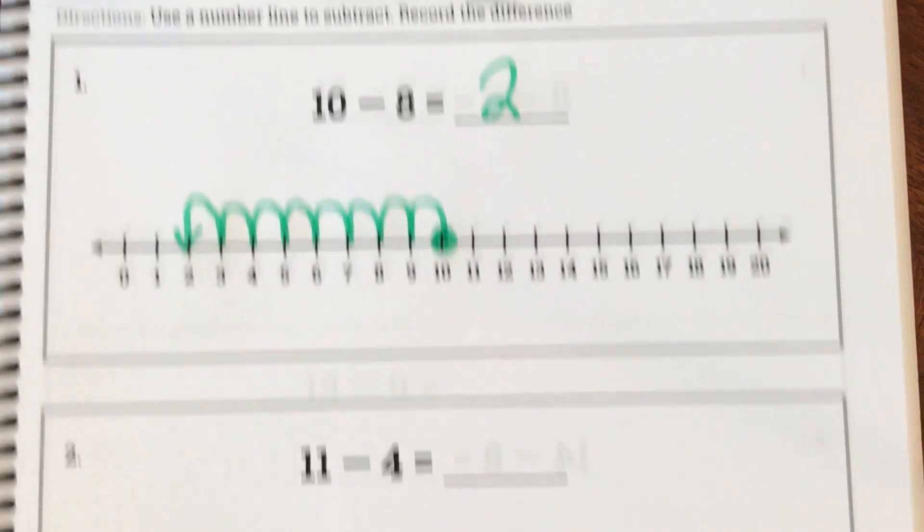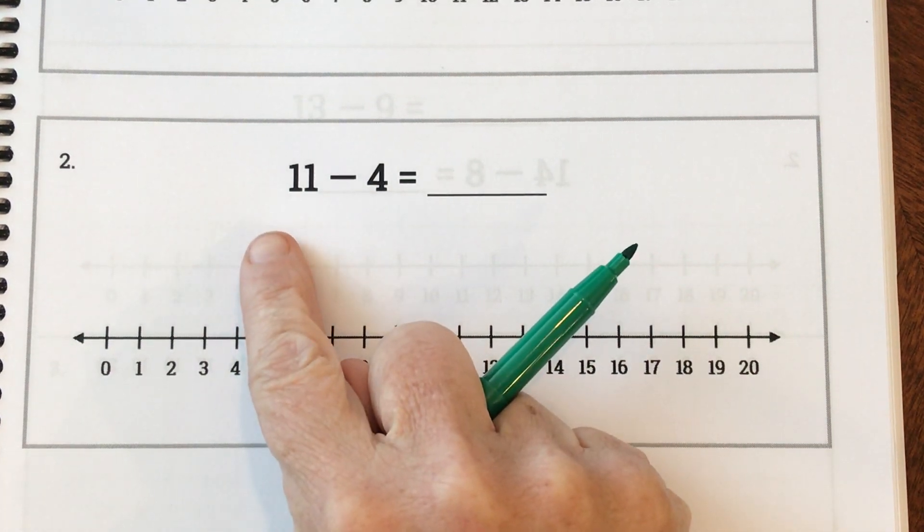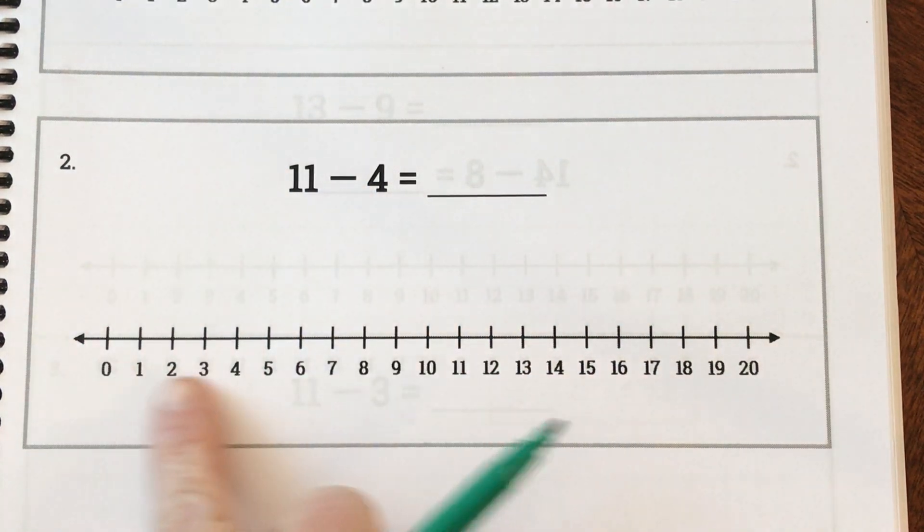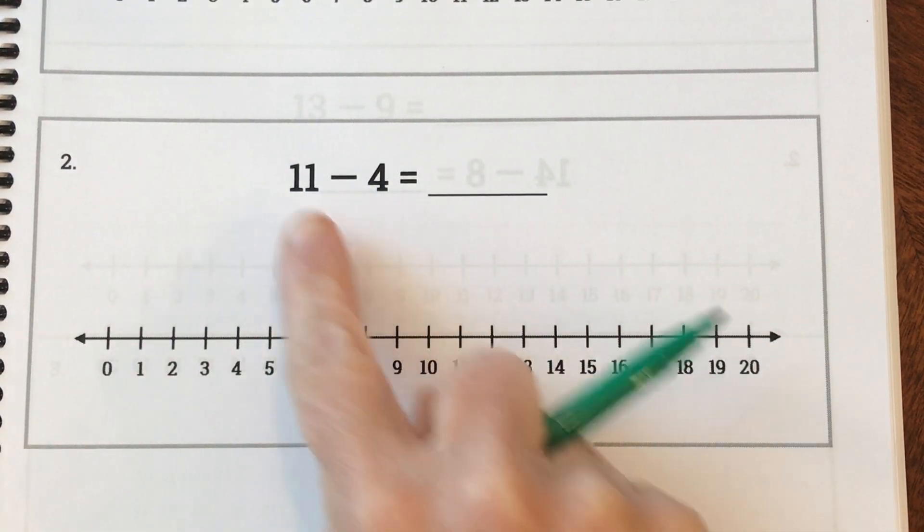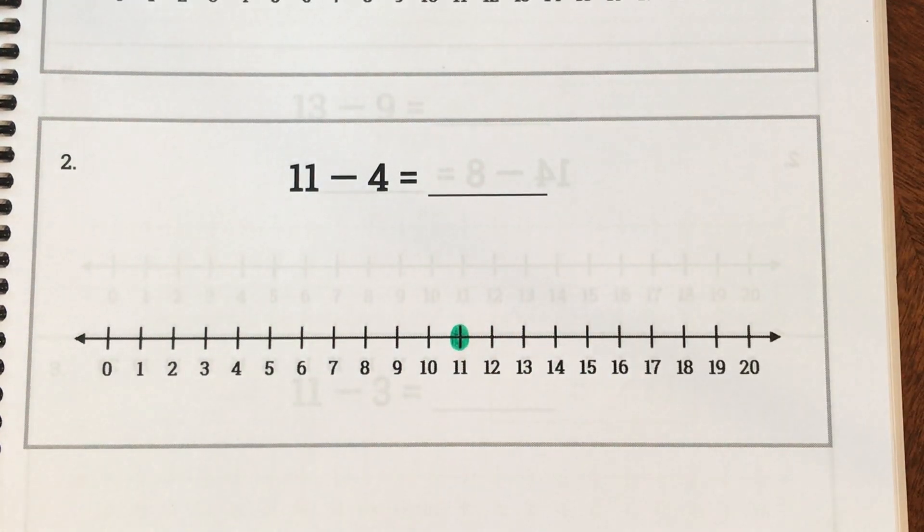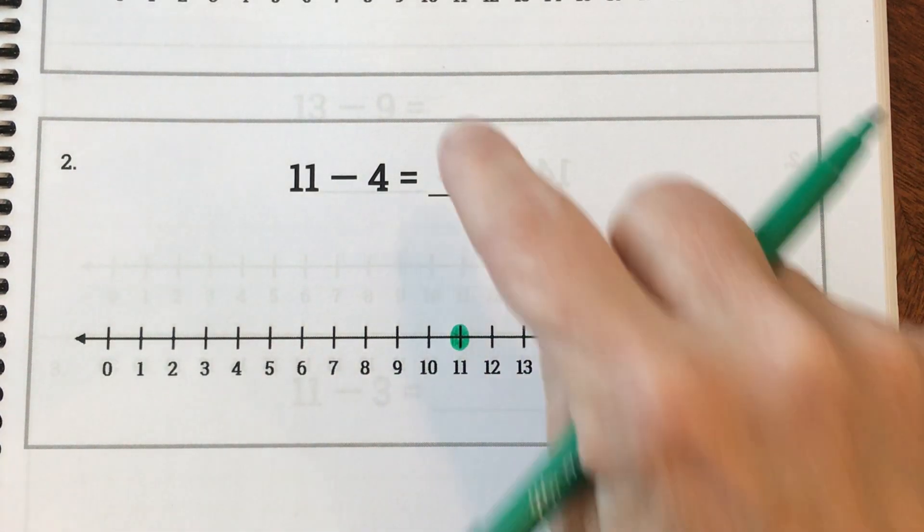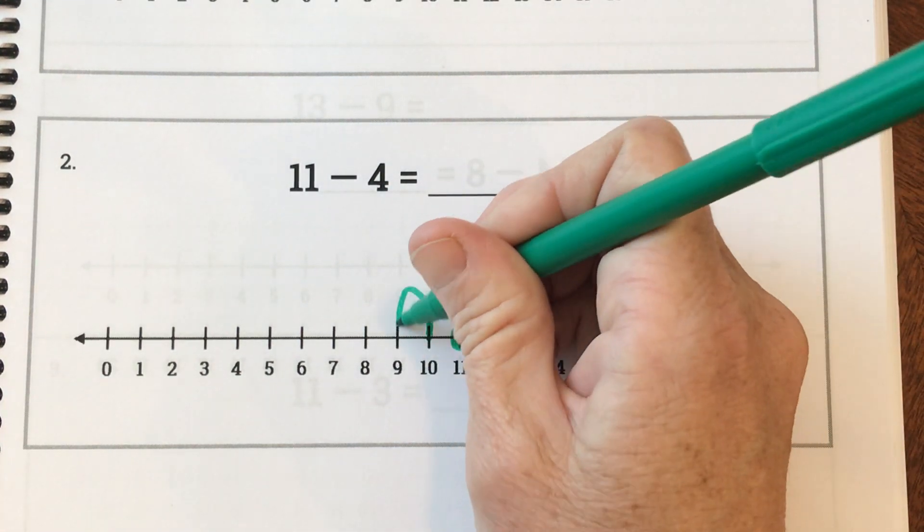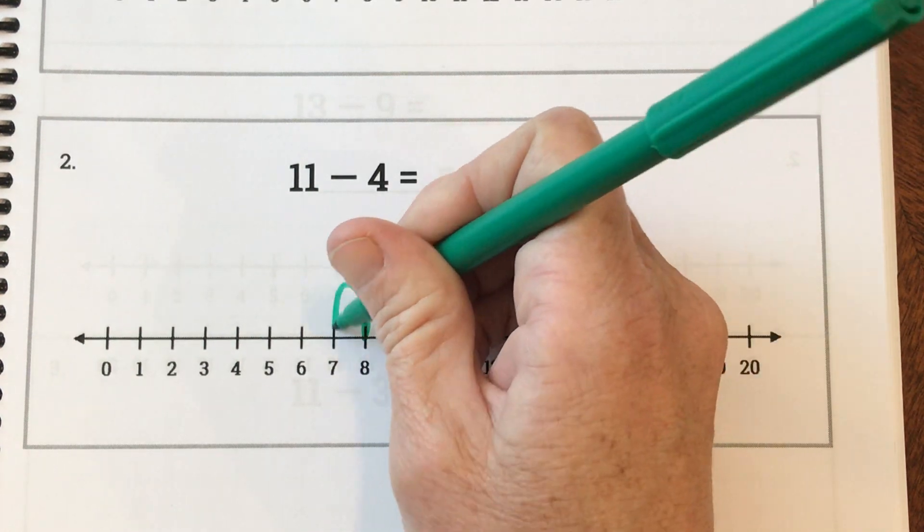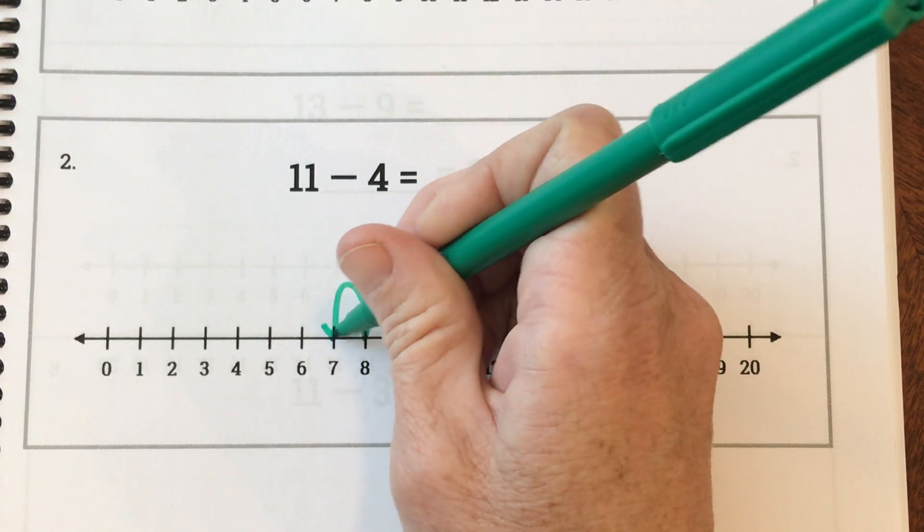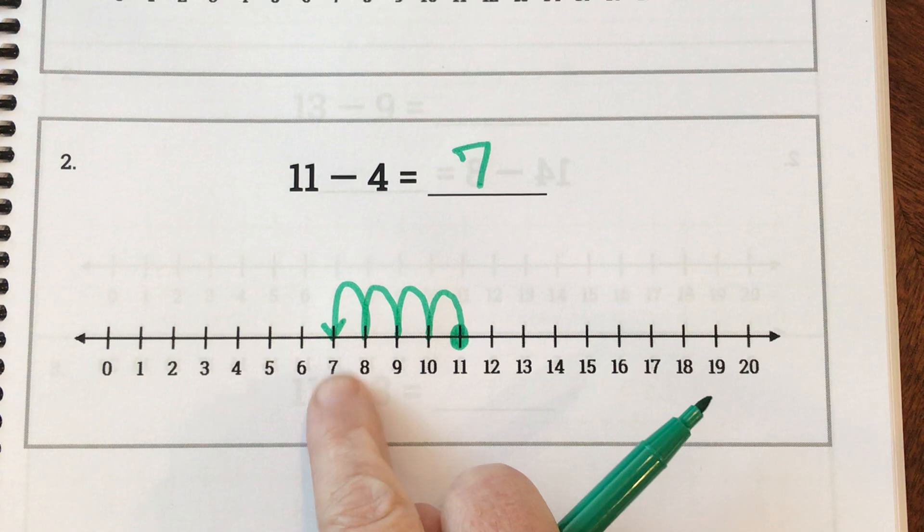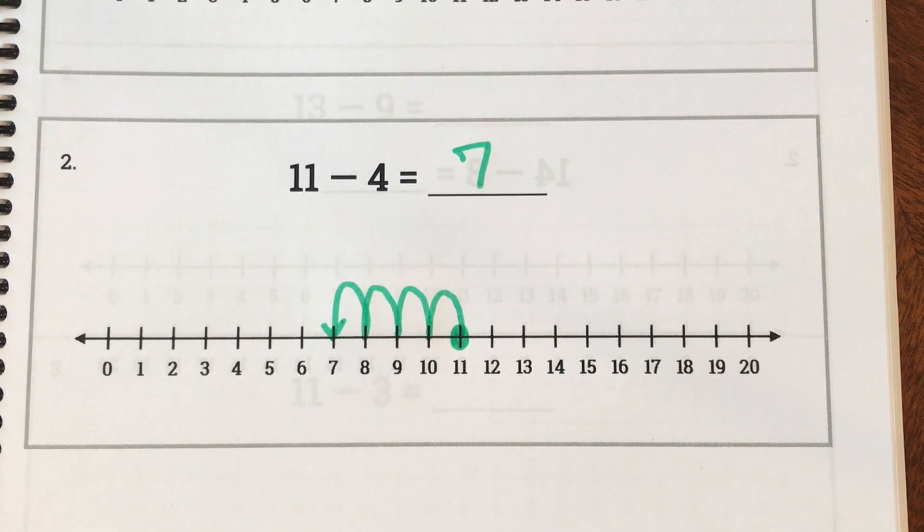So let's look at our next one. Our equation is 11 take away 4 or 11 subtract 4. So we're going to start with our starting number or our minuend which is 11. And we're going to count back or subtract our subtrahend. So ready? It's 4. So start right here. 1, 2, 3, 4. And what is our solution? 7. Our solution or our difference is 7. This is what we have left. Okay, boys and girls, you're going to be practicing these with your teacher and by yourself. Have a great day. Bye-bye.